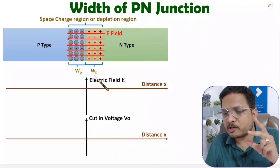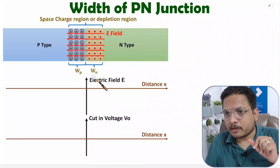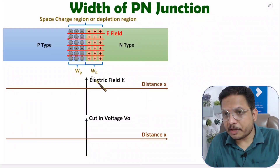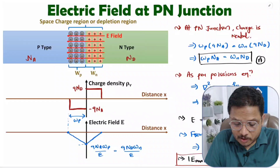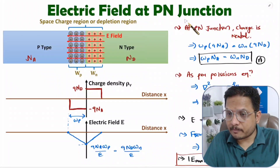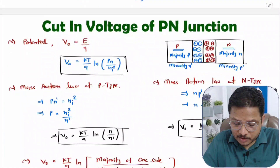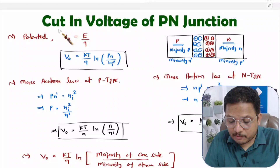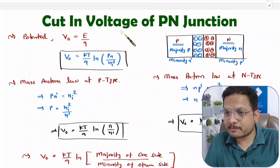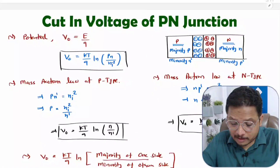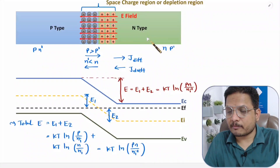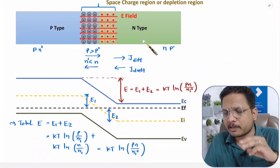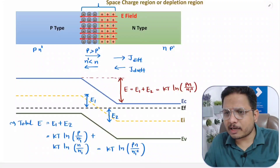Before you watch this video, I request you to go through my last three videos: one was based on electric field at the pn junction, the second was about the calculation of cutting voltage (also referred to as potential barrier), and the third was based on the energy band diagram of the pn junction. If you watch those three videos, it will be very easy to understand this derivation.